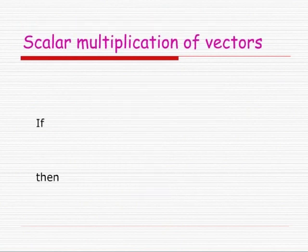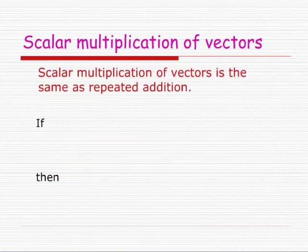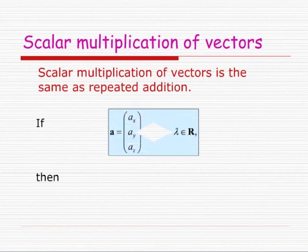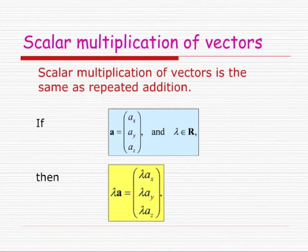The multiplication of a vector by a scalar is the same as repeated addition. So if A is written in component form AX, AY, AZ and lambda is some real number, then lambda times A is calculated by multiplying each component of A by lambda, giving lambda·AX, lambda·AY, and lambda·AZ.